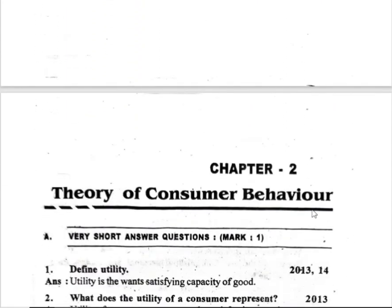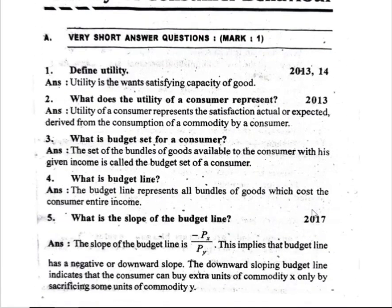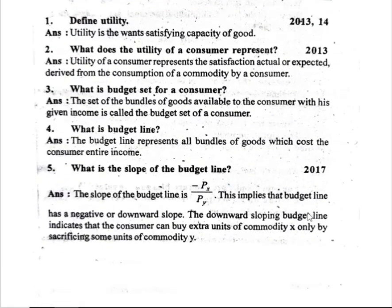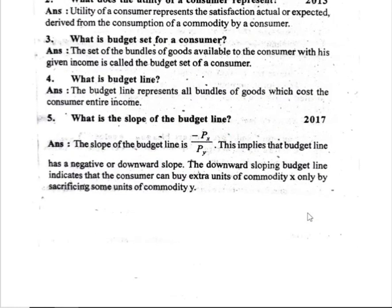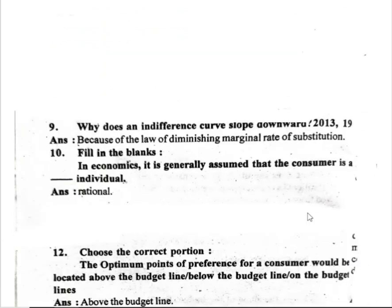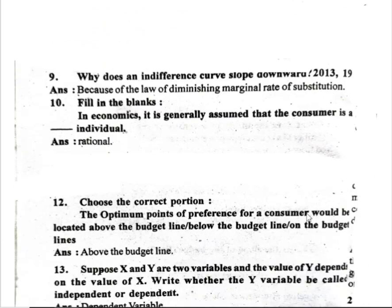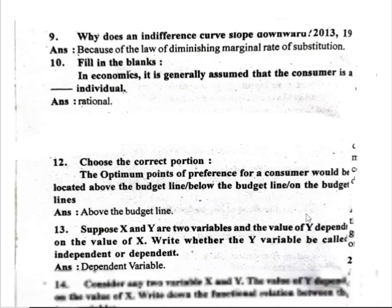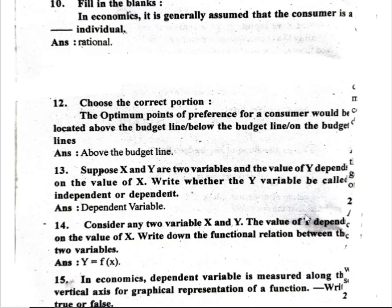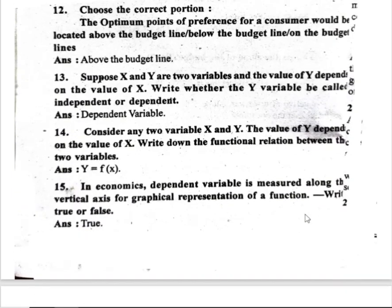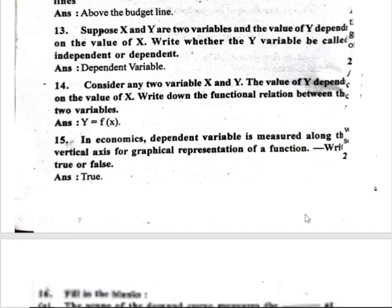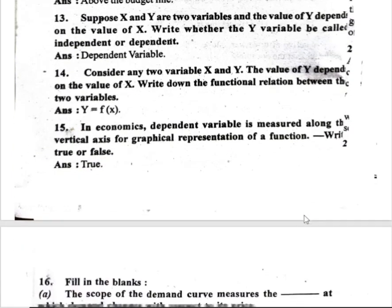Next is Chapter 2: theory of consumer behavior. Mark 1 question — define utility. Questions 2, 3, 4, and budget line are important. What is the slope of the budget line? Question 9, 10, and 12 are also important.